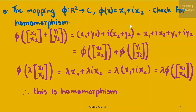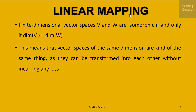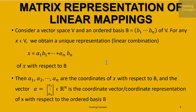There is a bijective linear mapping that converts element-wise addition of tuples in R² into the set of complex numbers with the corresponding addition. Finite dimensional vector spaces V and W are isomorphic if and only if the dimension of V equals the dimension of W. This means vector spaces of the same dimension are essentially the same thing, as they can be transformed into each other without any loss.